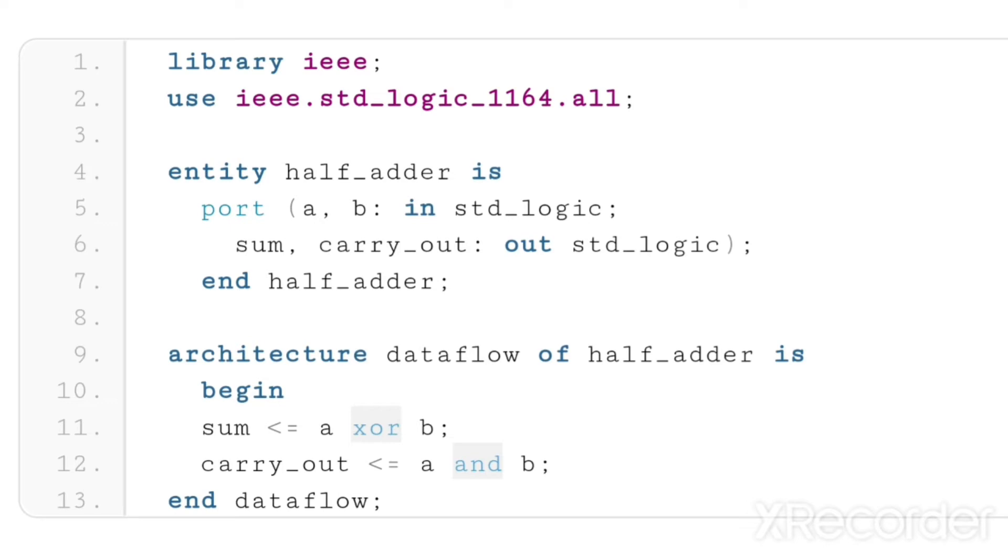std_logic is the data type I'm assigning for A and B. Similarly, out std_logic is the data type I'm assigning for sum and carry. std_logic means A and B can take values of 0, 1, and also U and X. Sum and carry can also be 0, 1, and other possible values like undefined and X.